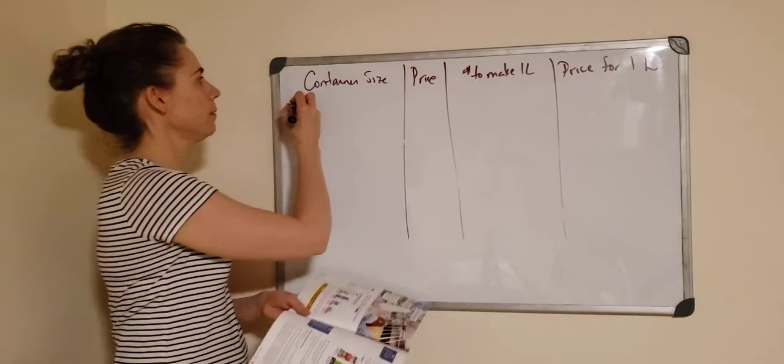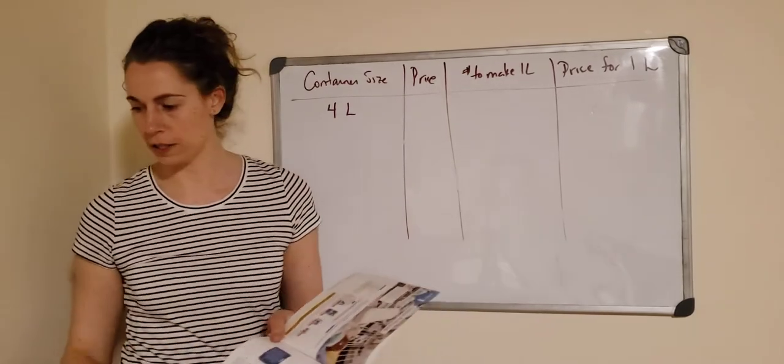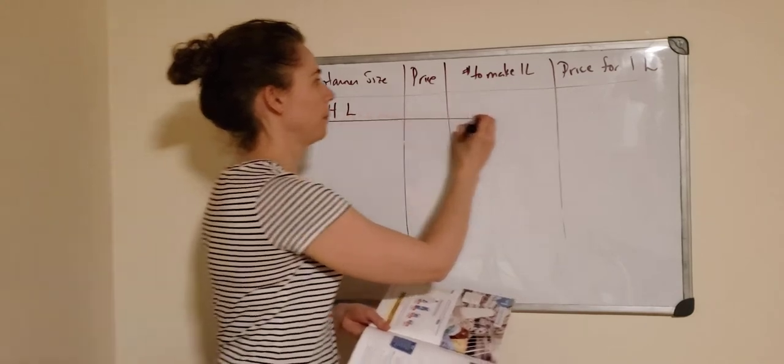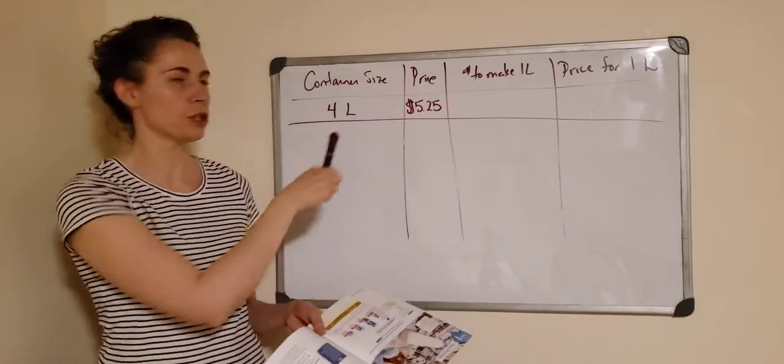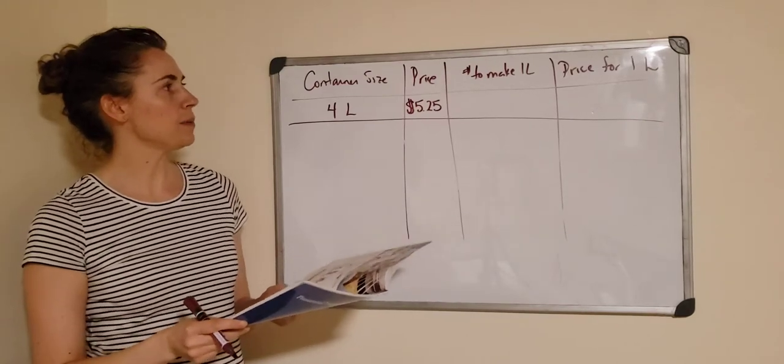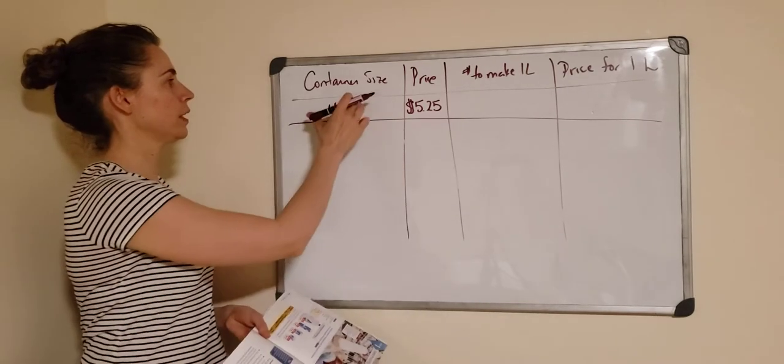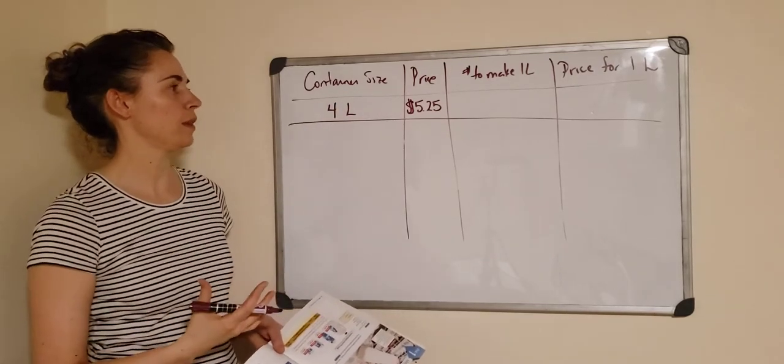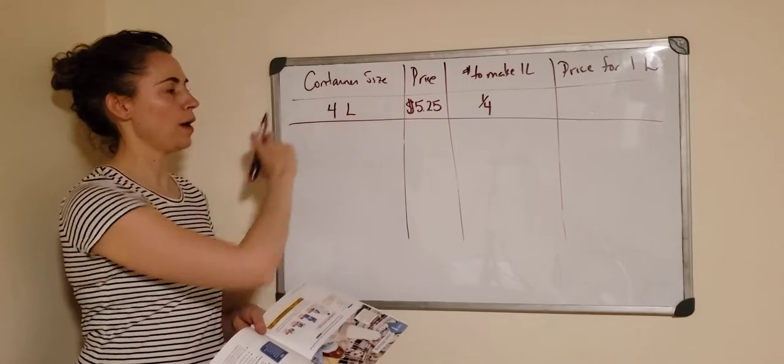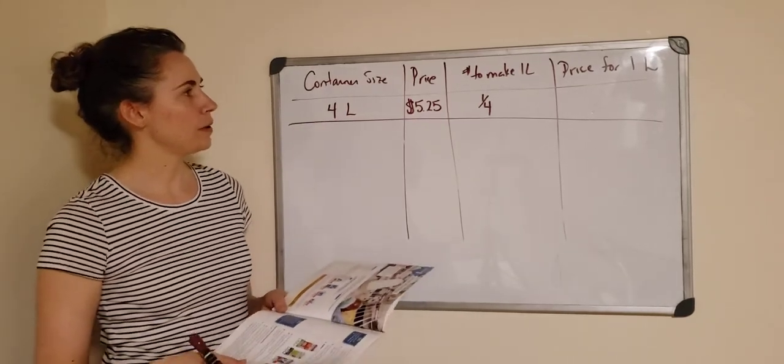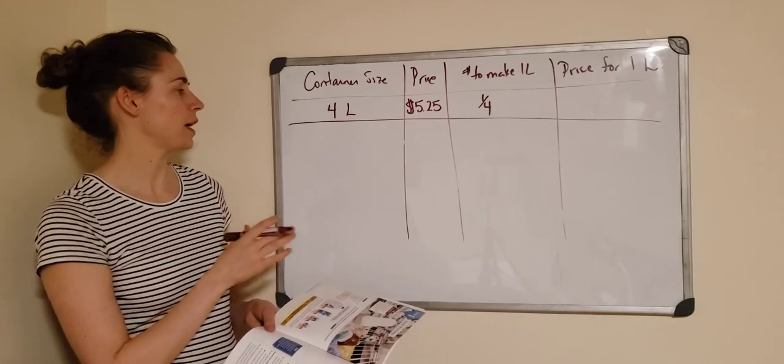The first one is four liters in container size. You can see it in the picture. The price is $5.25. That's a little cheaper than we get milk for right now, but not that far off. And number to make one liter - how many parts of a four liter container would it take to make one liter? It's one quarter, right? One quarter of four liters is one. So one out of four parts. Now for price per one liter, we'll come back to that. Let's go to the next one.